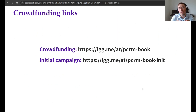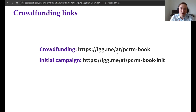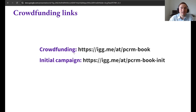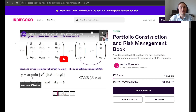In relation to the crowdfunding, you can get access to it by using this Indiegogo link, which has the PCRM book short name. If you want to see information about the initial crowdfunding, you can use the same short name but just add 'in' to it. I updated some technicalities, but otherwise everything remains the same.